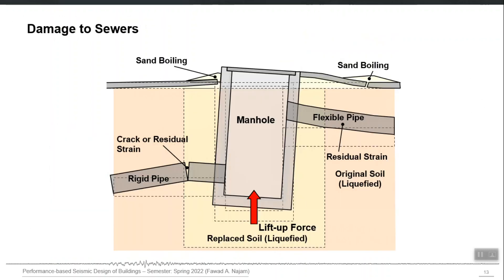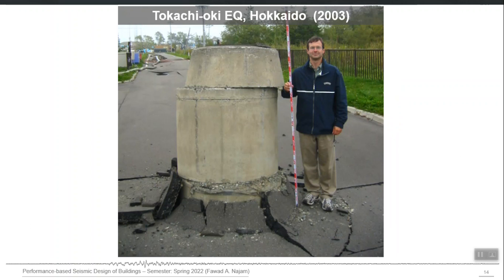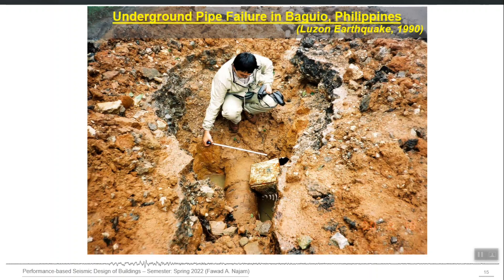If there are underground structures when soil behaves like a liquid, they boil up — they change their geometry because of buoyant forces and tend to go up. An example from Hokkaido in Japan shows an underground structure that just lifted up because of liquefaction. All underground piping systems will also be damaged, as shown in an example from the Luzon earthquake in the Philippines.